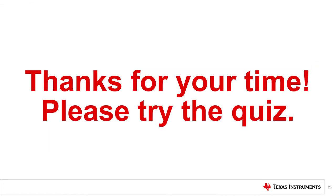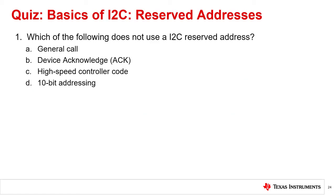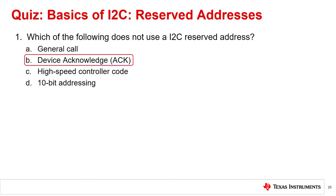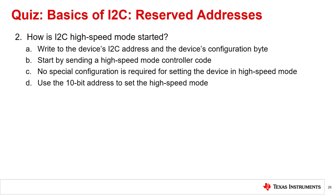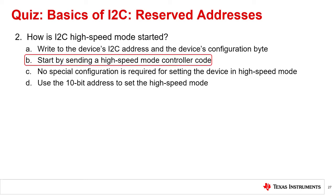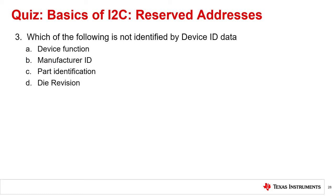That concludes this video. Thank you for watching. Please try the quiz to check your understanding of this video's content. Question 1: Which of the following does not use an I2C reserved address? The answer is B, device acknowledge. Question 2: How is I2C high-speed mode started? The correct answer is B, start by sending a high-speed mode controller code. Question 3: Which of the following is not identified by device ID data? The correct answer is A, device function.